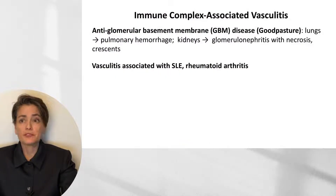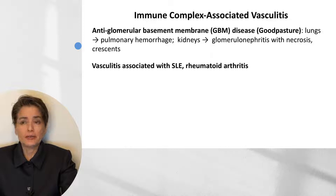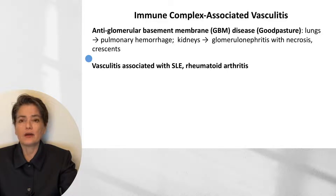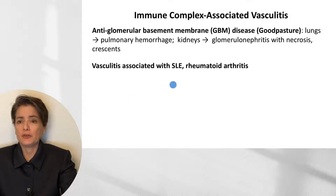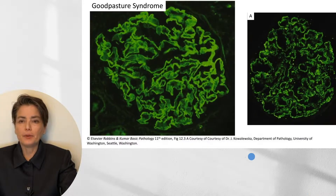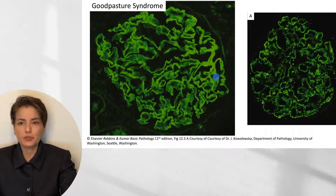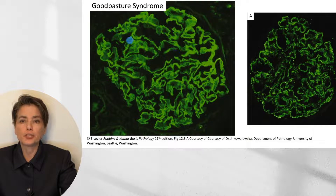Finally, immune complex-associated vasculitis: the most commonly considered is anti-glomerular basement membrane, or GBM disease — Goodpasture syndrome. We see impact on both the lungs and the kidneys because antibodies target components of the basement membranes, leading to pulmonary hemorrhage as well as glomerulonephritis with necrosis and crescents. Immune complex-associated vasculitis is also seen with systemic lupus erythematosus and rheumatoid arthritis. By contrast with the granular appearance of immune complex deposition, in Goodpasture syndrome the antibodies respond to bound antigen in the basement membrane, producing a very smooth, uniform deposition pattern.